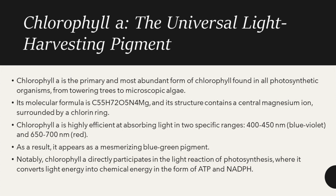Let's discuss chlorophyll A, the universal light-harvesting pigment. Chlorophyll A is the primary and most abundant form of chlorophyll found in all photosynthetic organisms, from towering trees to microscopic algae.